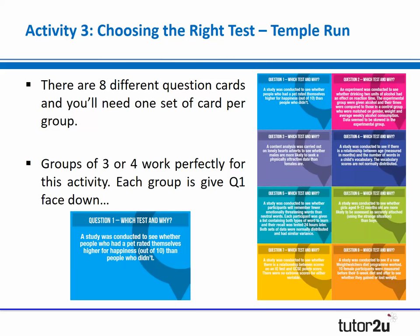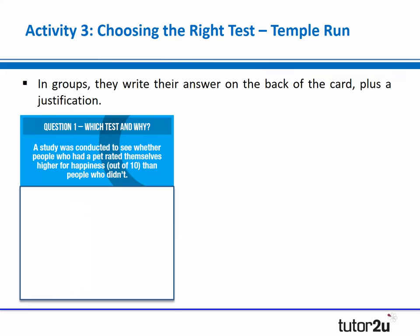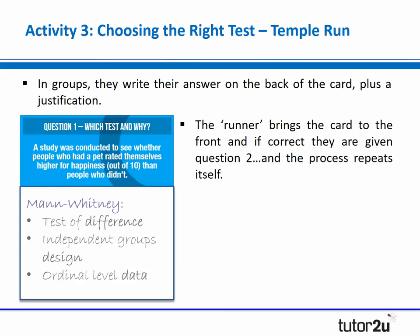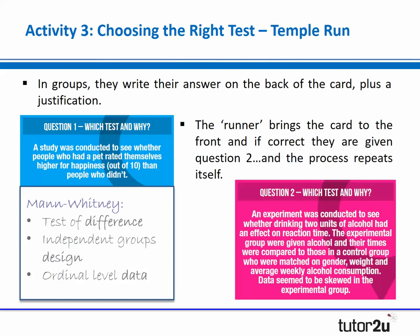You give every group question one face down to begin with. When you say go, they flip the card over and, as a group, outline what test is going to be used and justify their decision — hopefully using the 3D method. They might write on the back: Mann-Whitney, test of difference, independent groups design, ordinal level of data. One player in each group is assigned the role of runner; once they're happy with the correct answer and justification, the runner brings the card to the front. If correct, they receive the next question.